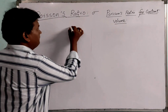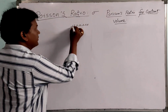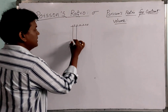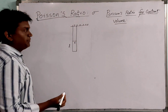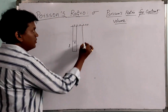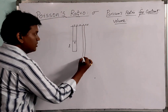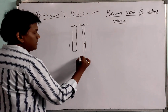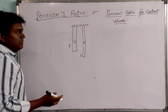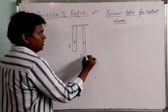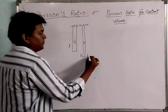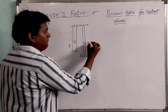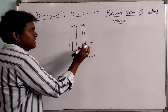If you consider a metal wire having some length L and a radius R, after application of some force, the wire deforms. Now, if you observe this, the length has been increased — the new length will be L plus delta L. And coming to the radius, it becomes R minus delta R, as the radius decreased.